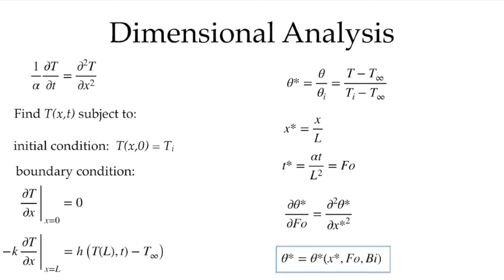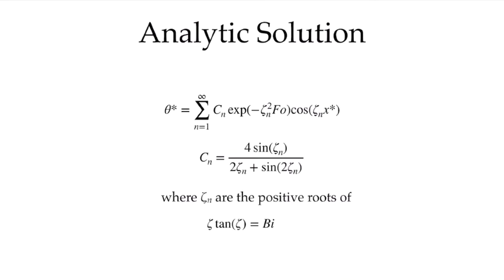The solution is a function of the non-dimensional position, the Fourier number governing time behavior, and the Biot number which tells us about the spatial variation of temperature within the wall. The analytic solution is obtained by the method of separation of variables, yielding a Fourier series. The non-dimensional temperature as a function of Fourier number is given by an infinite series with coefficients C_n. To evaluate each coefficient we need to solve the transcendental equation zeta·tan(zeta) = Biot. While we have an analytic solution, solving this transcendental equation requires numerical methods.